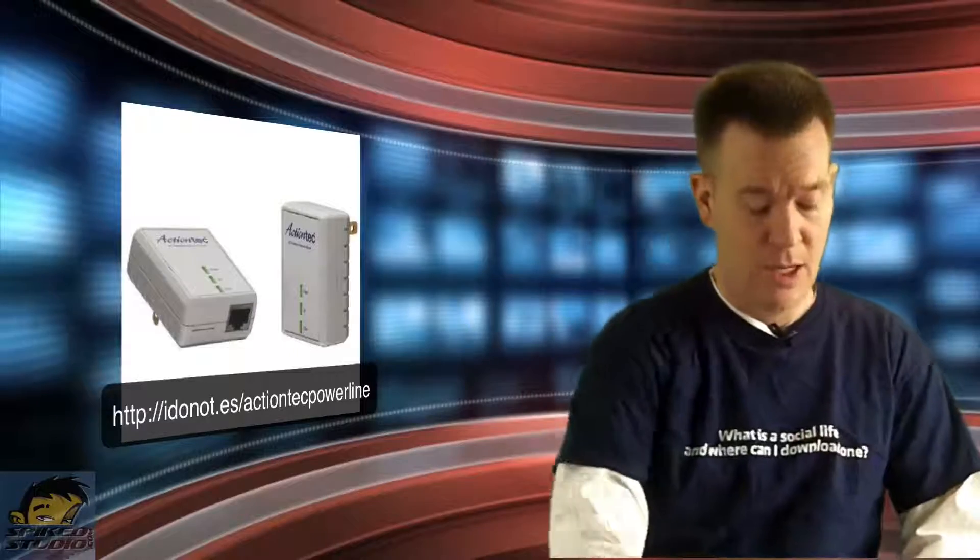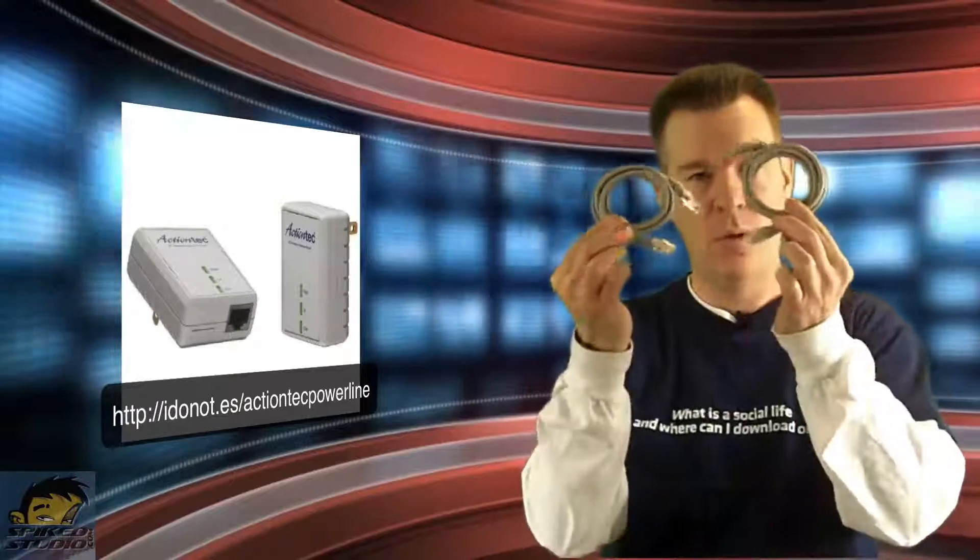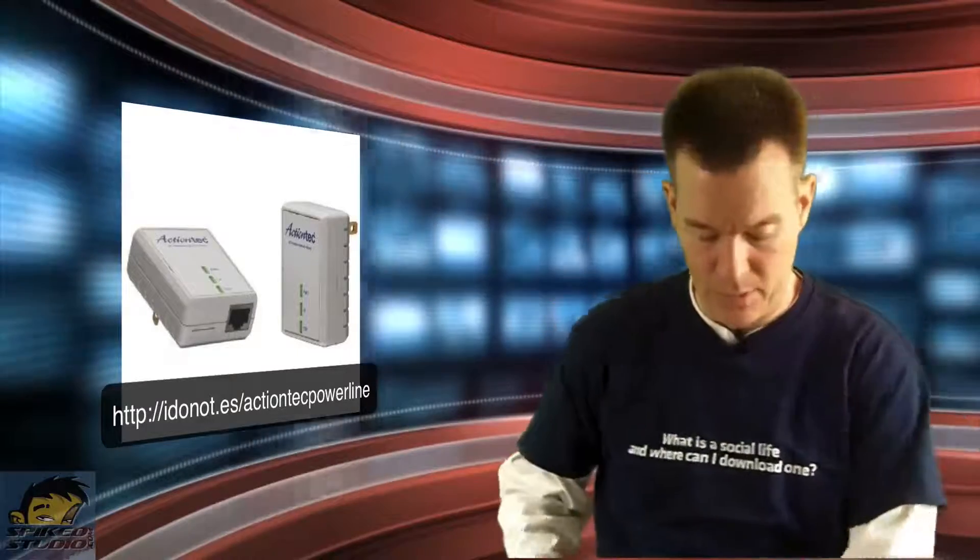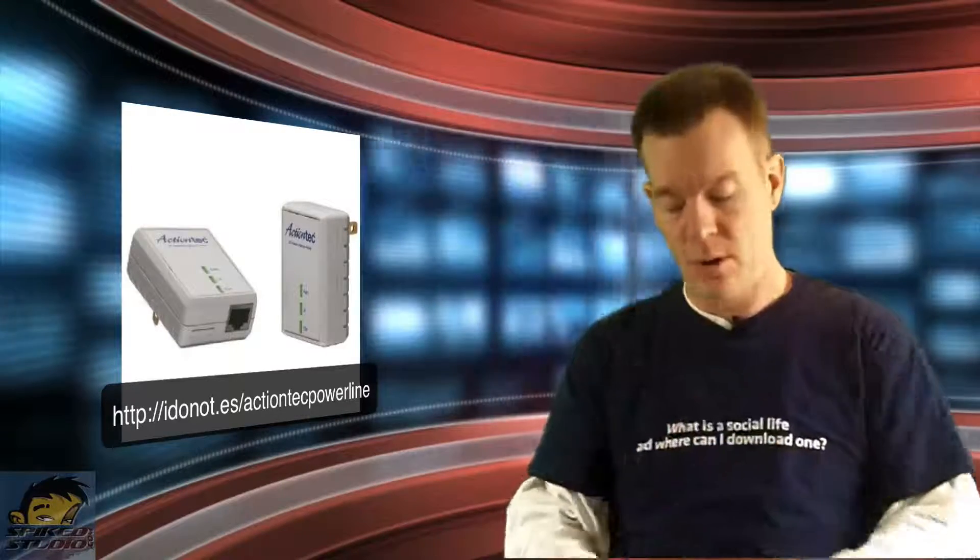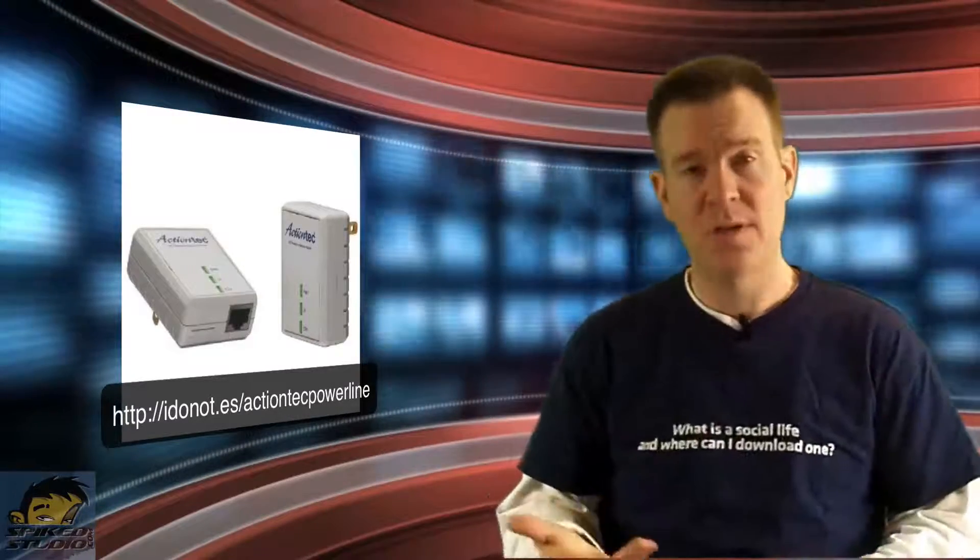What else comes in the box? They nicely include two Ethernet cables, which is great because many products don't include them. Plug one into the wall and into an empty port on your router. On the other side, plug it into the wall and into your device. You're done. It should sync up in seconds and you should have better speeds.